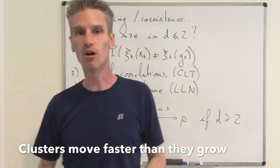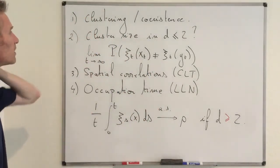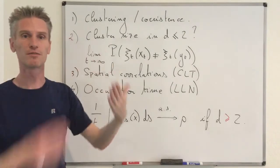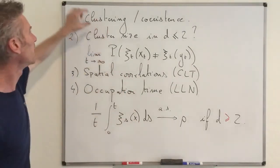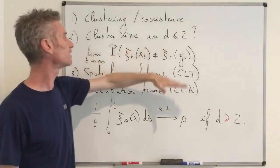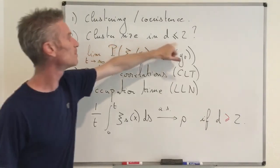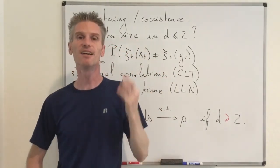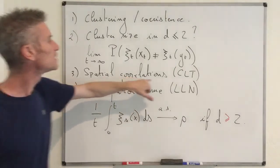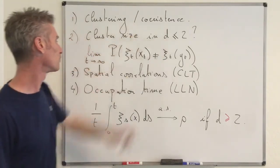So I'm done with my overview of all the results about the voter model. To sum up, we covered four main points. First, there is a phase transition from clustering to coexistence going from dimension two to dimension three. Second, regarding cluster size: in one dimension it scales like square root of t, but in two dimensions there is no natural scale for the cluster size.